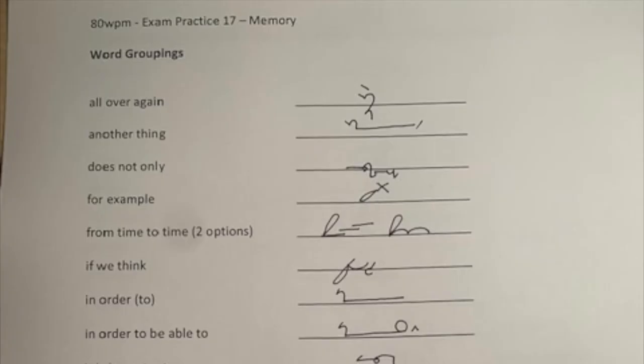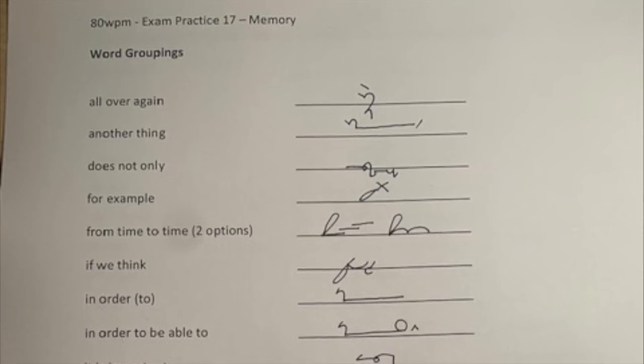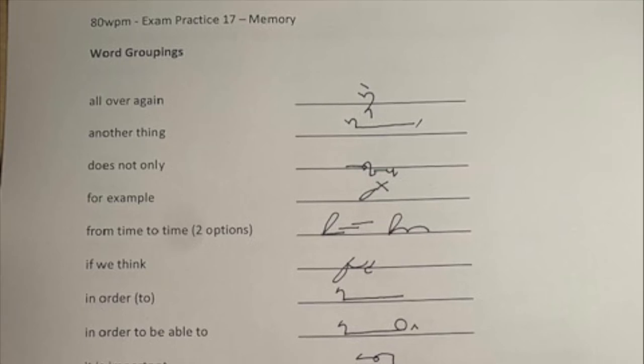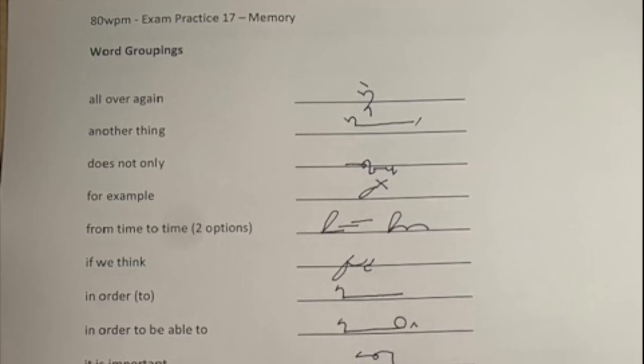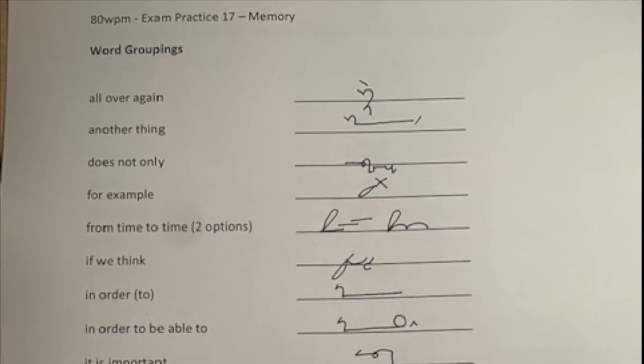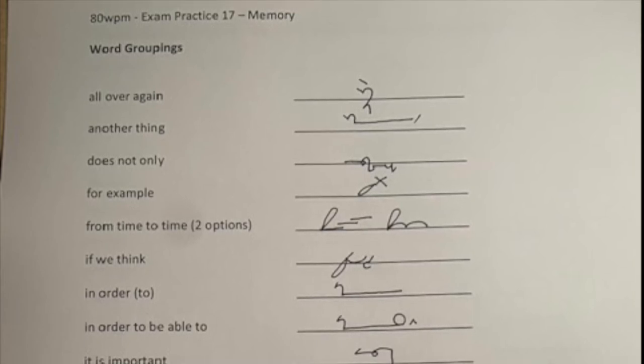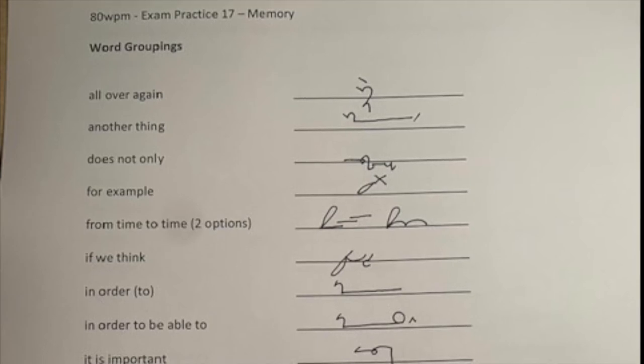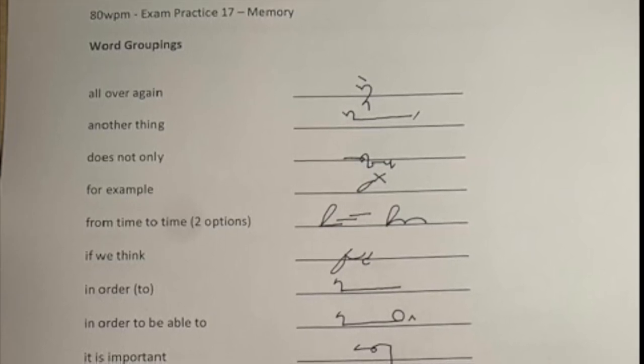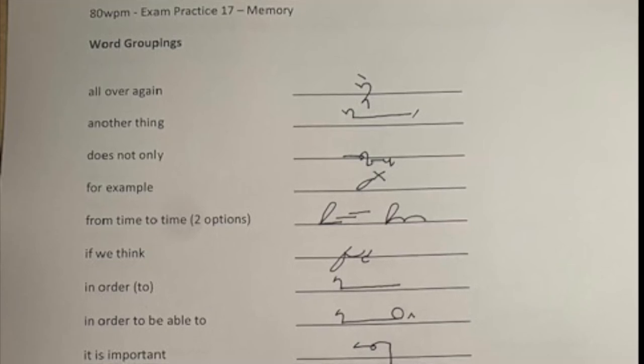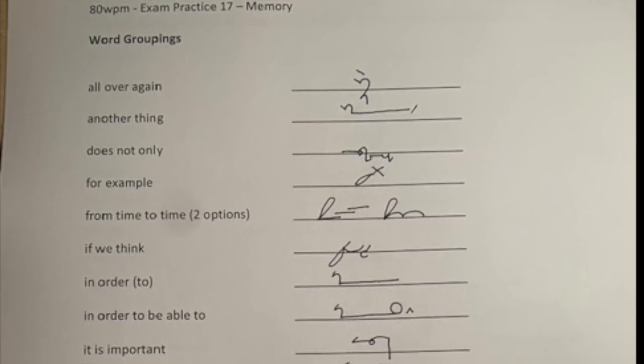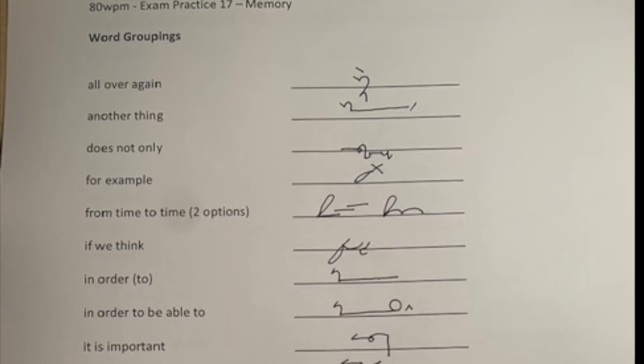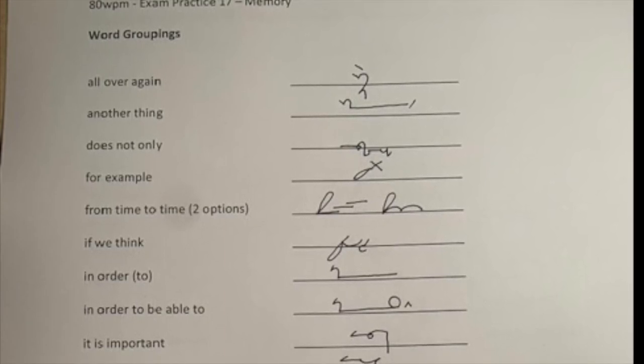Now the word groupings in alphabetical order. There's some really good ones here, some of which we haven't had before. So we're starting with all over again. Now, all over whatever may follow is written with the A over the top of what comes next. So here we've got an A over the top of again and it gives us the phrase all over again. If we were writing all over the place, we would write an A and we'd write the word place underneath it. If we were writing all over the floor, we'd write the A and the FL blend doubled for half floor and so on.